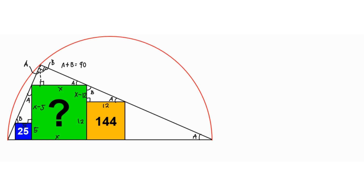Using the similarity of the two triangles, we set up the proportion. Focusing on the triangle above the orange square, we have 12 over (x minus 12) equal to (x minus 5) over 5, where the corresponding leg for 12 is (x minus 5) and the corresponding leg for (x minus 12) is 5.